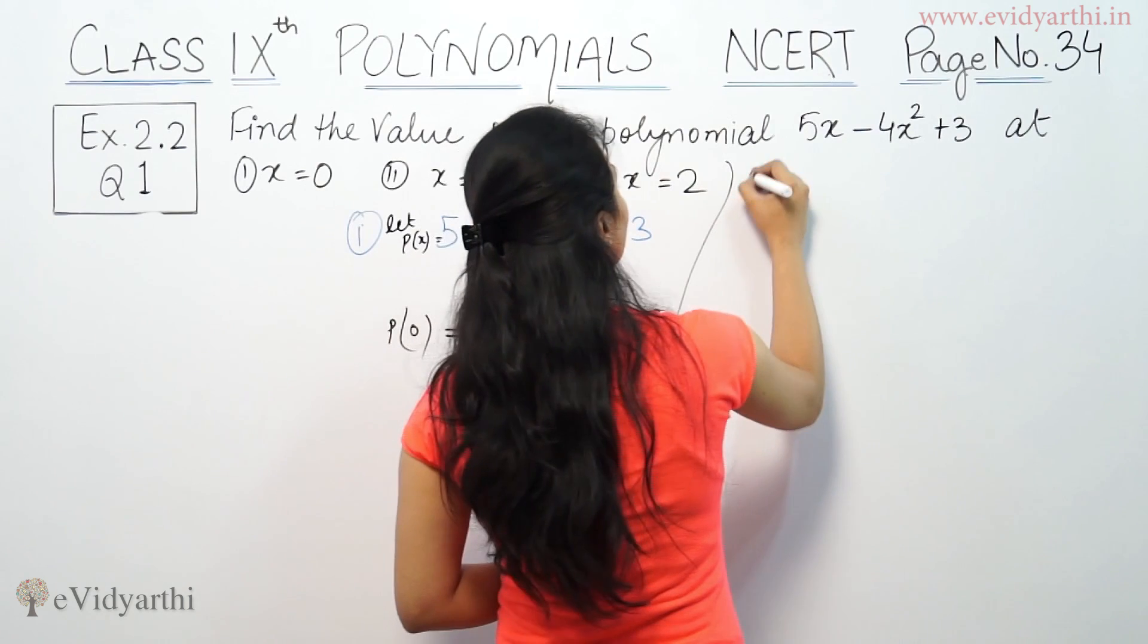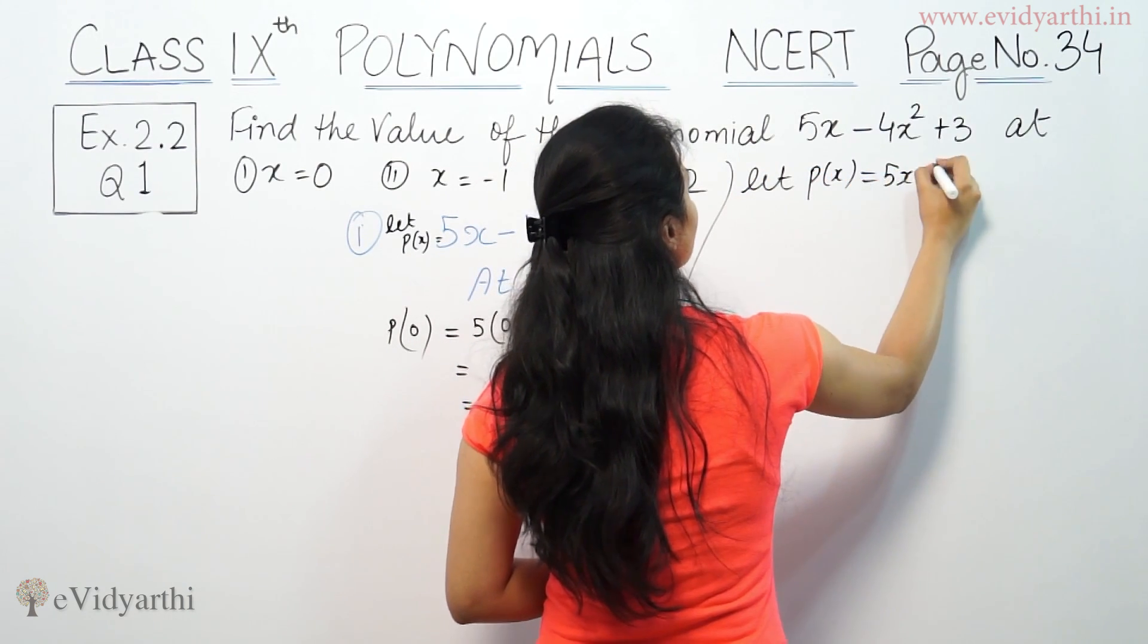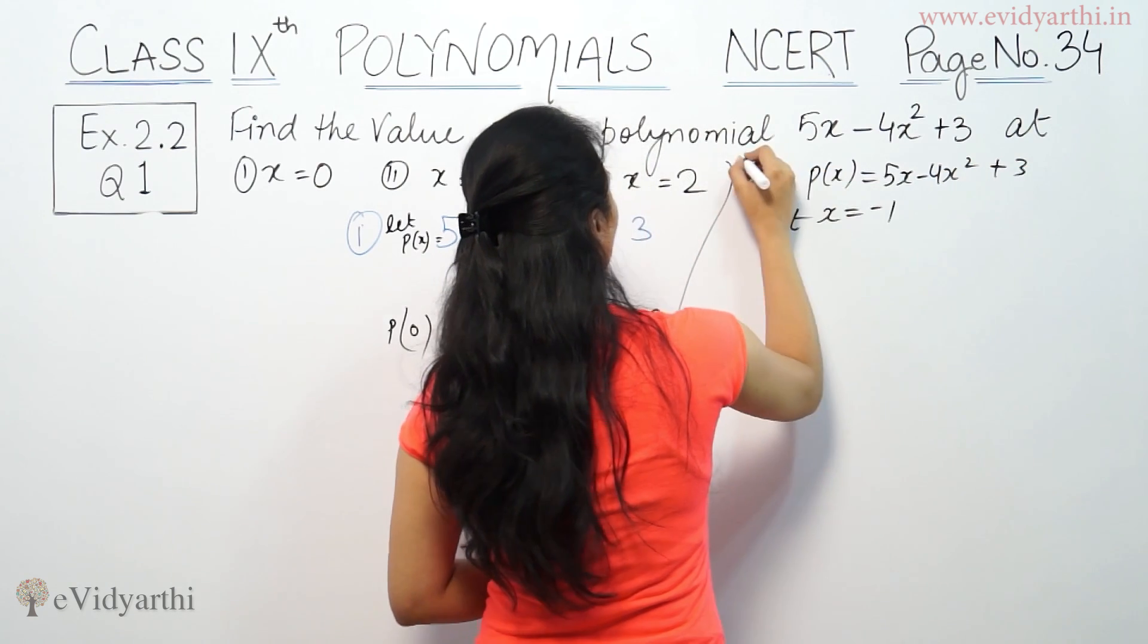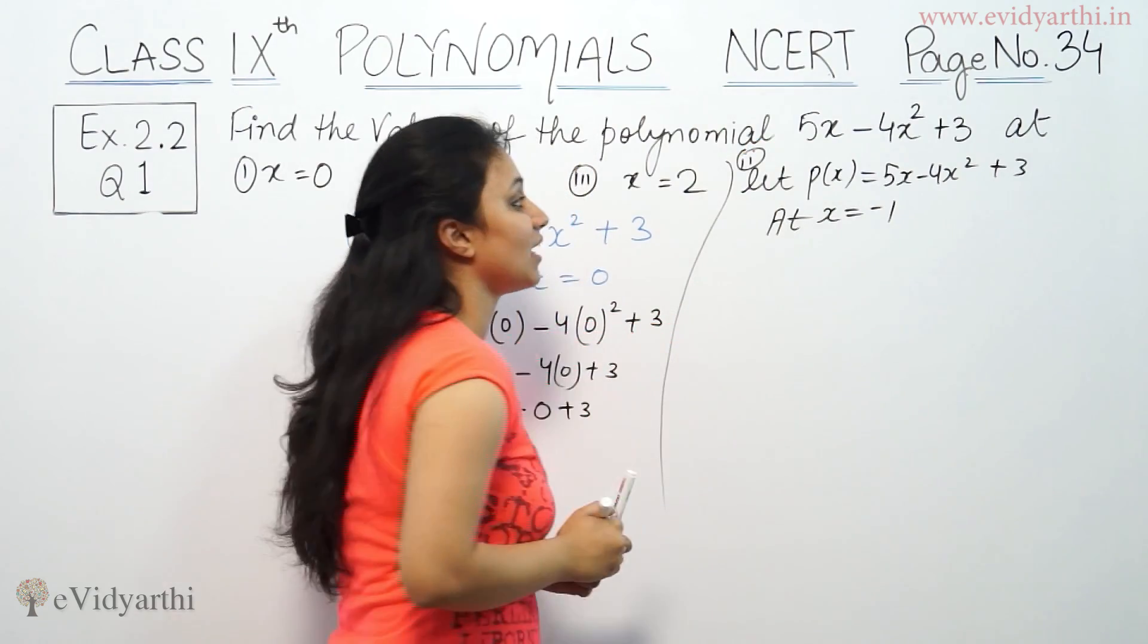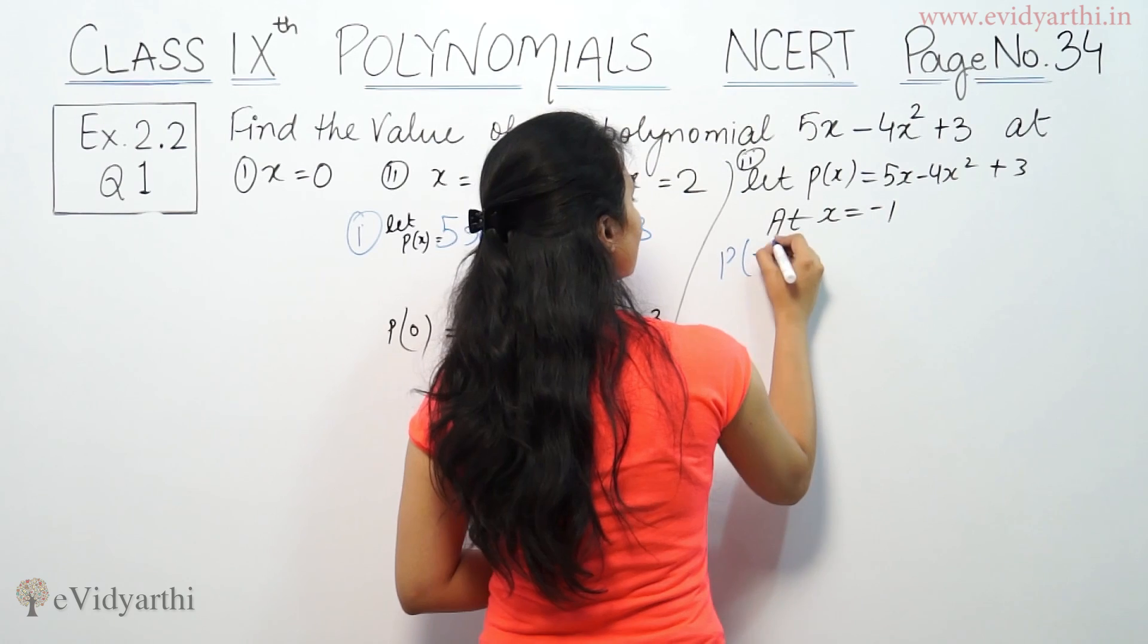Same way, p(x) equals 5x minus 4x squared plus 3. At x equals minus 1, I will pass here p(x) equal to minus 1.